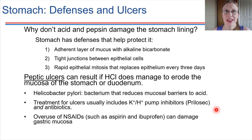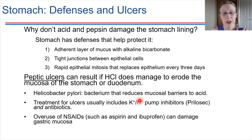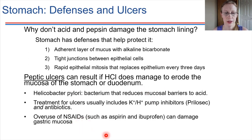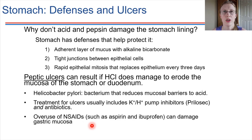Treatment for ulcers usually involves a couple of key things: decreasing the amount of protons secreted into the stomach to raise the pH, and treatment with antibiotics to address Helicobacter pylori — treating this bacteria leads to a stronger mucosal barrier in the long run. Some substances like non-steroidal anti-inflammatory drugs can also damage the mucous membranes. For some people this is a hard balance — they may need ibuprofen for inflammation control, but using it too much can lead to problems in the stomach specifically.